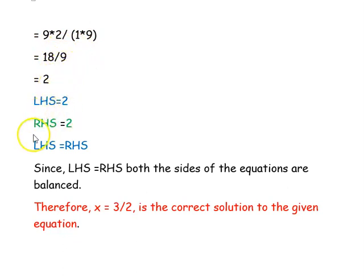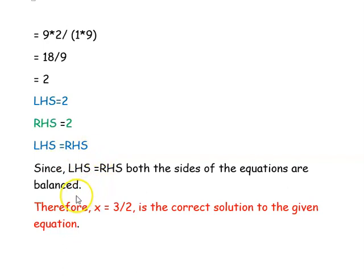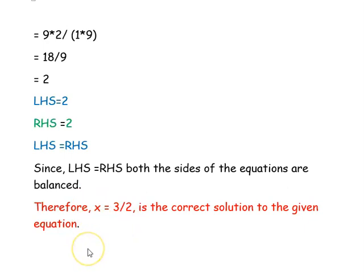The left-hand side is 2 and the right-hand side is 2. So both sides are equal and the equation is balanced, confirming x = 3/2 is the correct solution. Hope you have understood all the questions well. Thank you for watching the video.